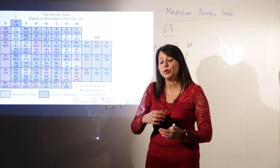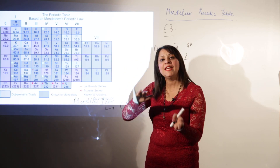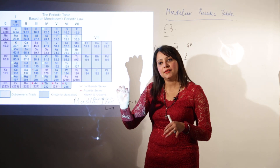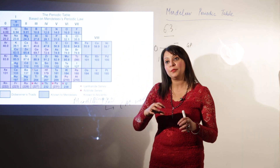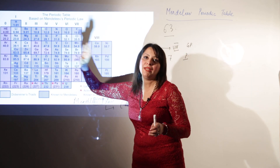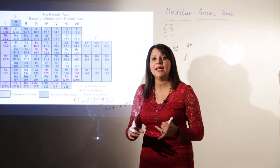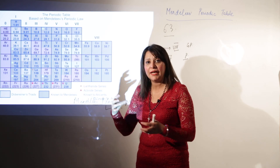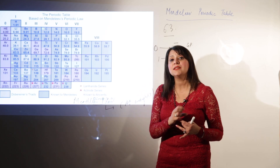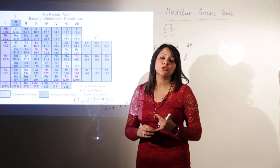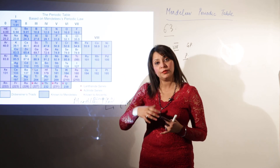Everyone was shocked at how Mendeleev knew about those undiscovered elements. He named those vacant spaces as 'Eka-aluminium' and 'Eka-boron' — meaning 'next to' — and left those spaces confident that the elements would eventually be discovered and placed there without requiring changes to the periodic table. He was so confident that those elements would definitely be found.